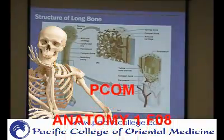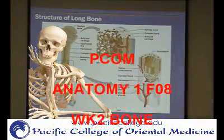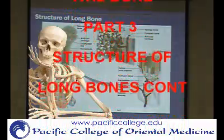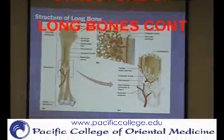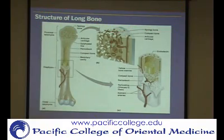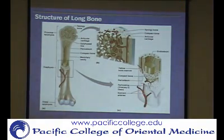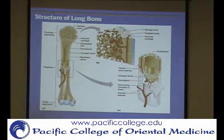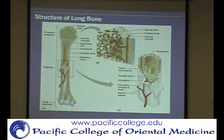Bones are also going to need to have blood supply. We'll talk about different openings where blood vessels are going to be allowed to go in and out of the bones. There's going to be a main nutrient artery that's going to come in to the periosteum, but eventually it's going to have to get its way into the bone and go through all the different compartments so that all the cells are able to get blood supply — nutrients go in, nutrients go out.